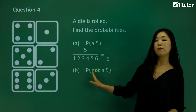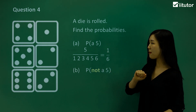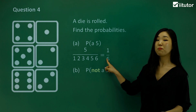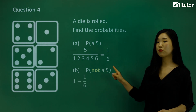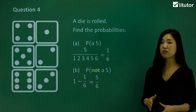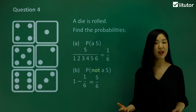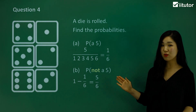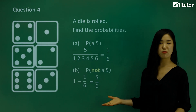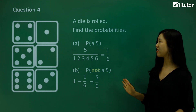Now B: find the probability of not a 5. Not a 5 is the complement of being a 5. The probability of a complementary event is 1 minus the probability of the event. So to calculate the probability of not being a 5, we subtract that probability from 1. So 1 minus 1/6 gives us 5/6 — that's the probability of not being a 5. You can see that 1/6 plus 5/6 adds up to 6/6 which is 1, the total probability.